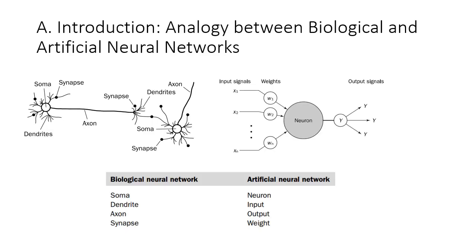Being inspired by the biological brain, an analogy can be made between the components of biological and artificial neural networks. For example, the soma can be mapped to a neuron, the dendrite can be mapped to input, the axon can be mapped to output, while the synapse can be mapped to weight in an artificial neural network.